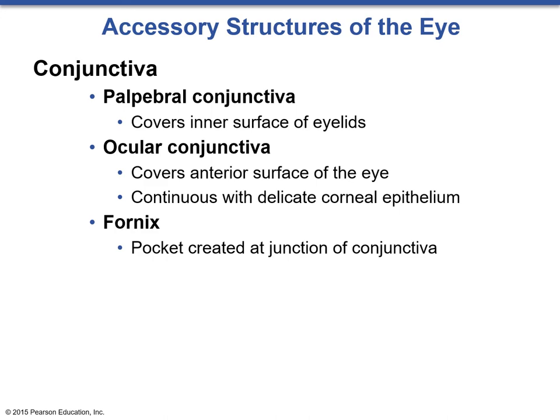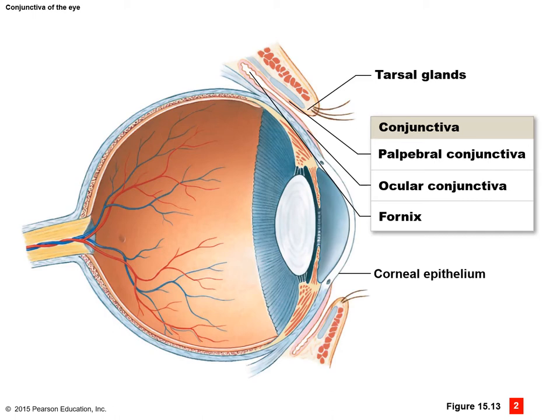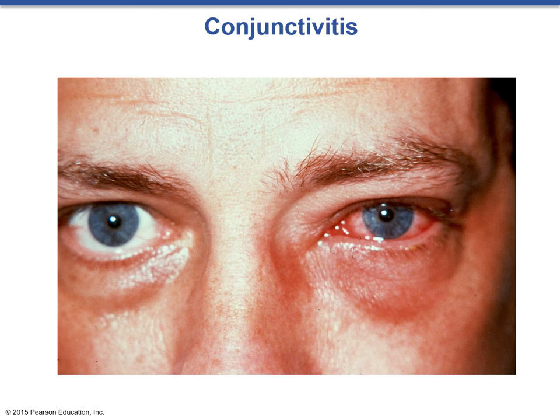Here we can see the conjunctiva as it comes down from the palpabrae. We can see the palpable conjunctiva and the ocular conjunctiva as they meet up at the fornix. Conjunctivitis is a reddening of the conjunctiva due to dilation of blood vessels. This can be caused by an infection, more commonly known as pink eye, or by any number of physical, chemical, or allergic responses. Even staring at a computer or TV for too long can cause this.